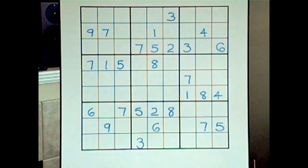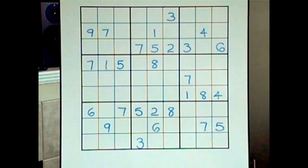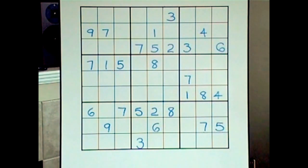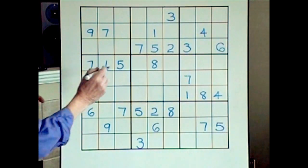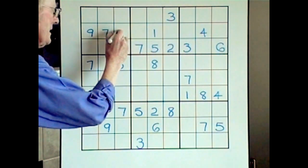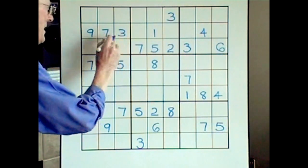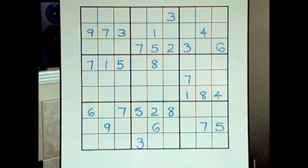Let's start with horizontal blocks. For ones, only one place — leave it. Twos — the same, leave it. Threes — yes, we have a bottom and a top, so we'll put the three in here. So we now have another line to be careful about.